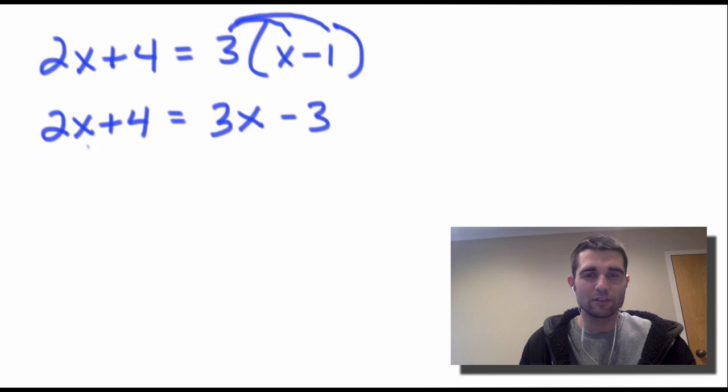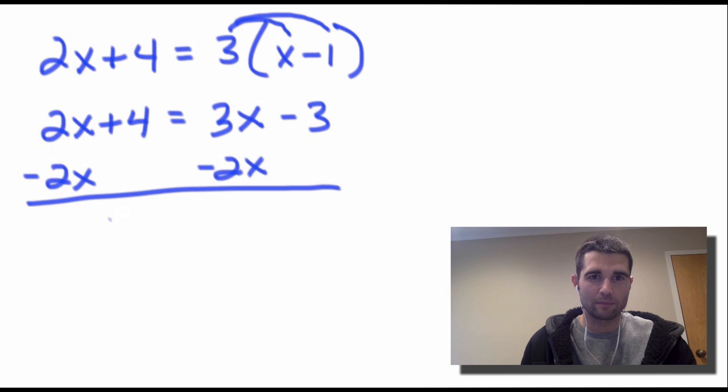Next, this is the first equation where we had an x on both sides of the equal sign. So we're going to try to get our x's together. We're going to do that by subtracting 2x on each side. On the left, the 2x's cancel. We're just left with 4. And 3 minus 2 is 1.